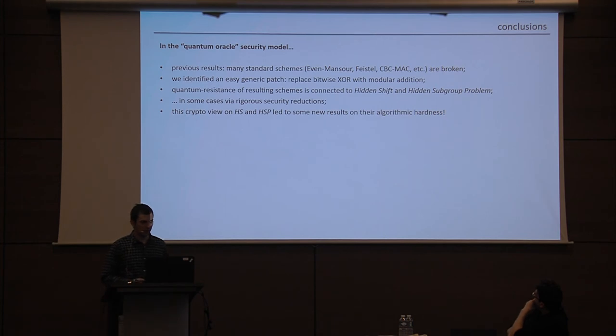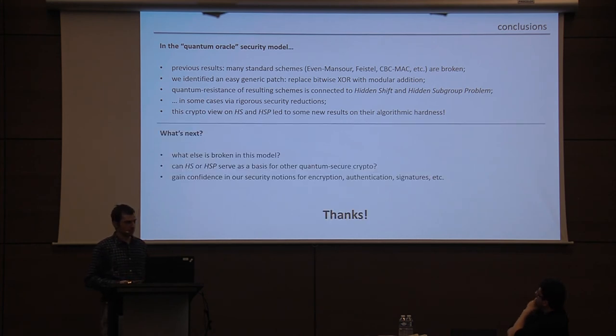So let me summarize by saying the following. By these amazing results from last year and the past few years, we know that in this Quantum Oracle security model, many standard schemes are broken. However, there seems to be a pretty easy kind of generic patch, which is to replace the bitwise XOR operation with, let's say, modular addition. So that at least gets you to where the best-known quantum attacks are sub-exponential time. Or you could pick your favorite group operation, and in general, then we really don't know what to do quantumly. And we observed that the quantum resistance of these adaptive schemes is now connected to the hidden shift and hidden subgroup problems, which is a nice new observation that allowed us to prove some new things about these problems that somehow had not been noticed by the quantum algorithms community in the past.